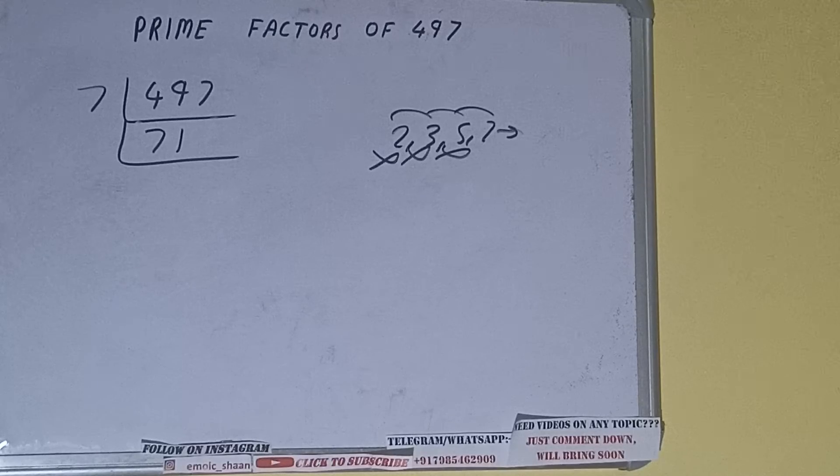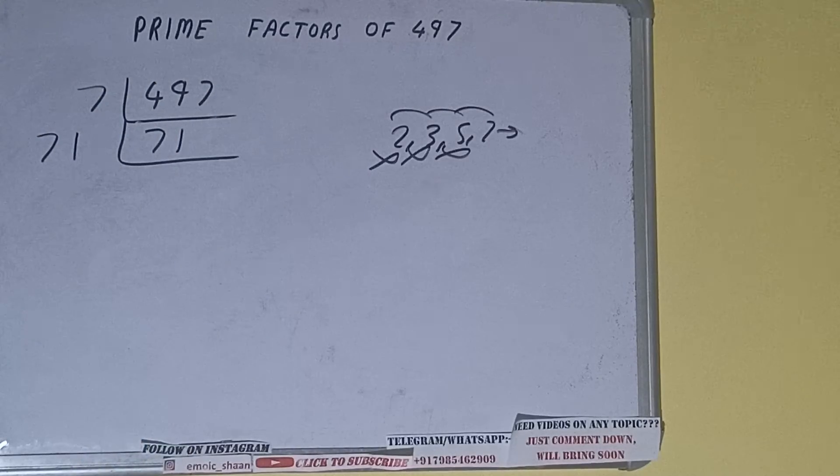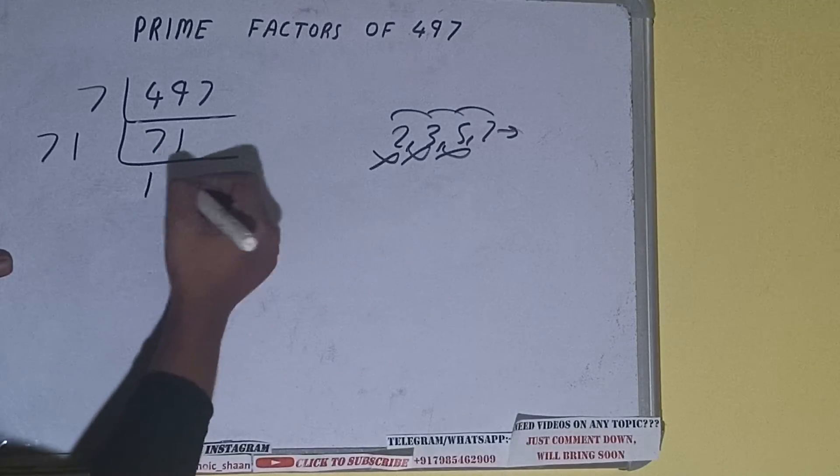71 is not divisible by 7, and actually 71 is also a prime number, so it is only divisible by itself. When we divide 71 by 71, we get 1. Once we reach 1, we need to stop.